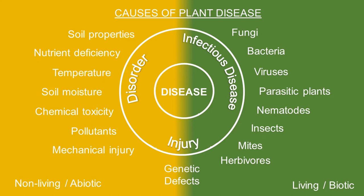Then we have disorders caused by pollutants, chemical toxicity, soil moisture extremes, temperature extremes, nutrient deficiencies, and soil properties that can impact the health of a plant. On the right side of this chart we have living or biotic causes of disease, and on the left side we have non-living or abiotic causes of disease.